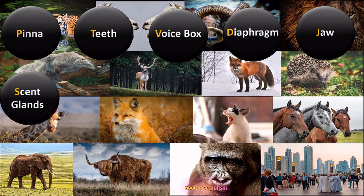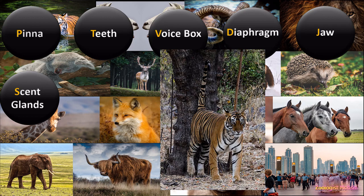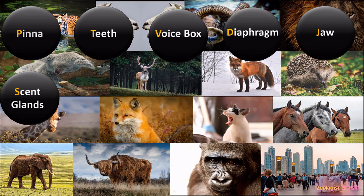The next salient feature is scent glands. All mammals have scent glands across the body under the skin, but the most prominent are present in the anal region. You can see in the diagram that a tiger secretes pheromones from the anal scent glands, mixed with urine, to mark its territory. Scent glands are also present in humans but are masked by deodorants or sprays we use daily.